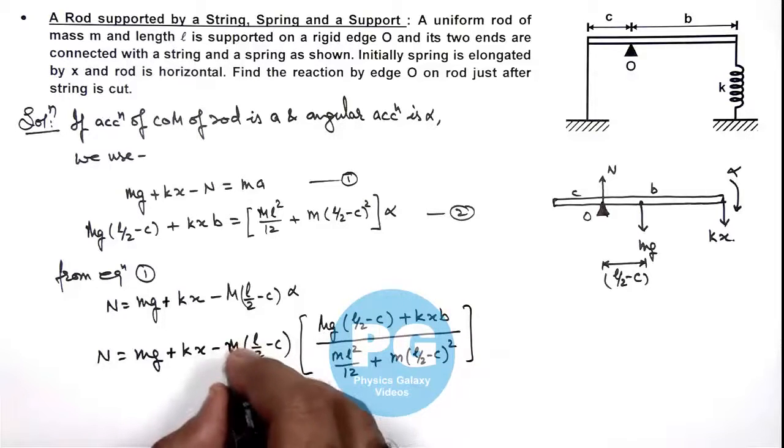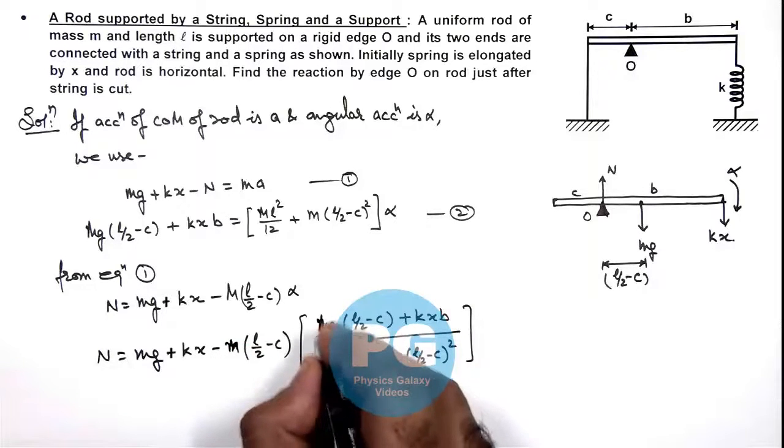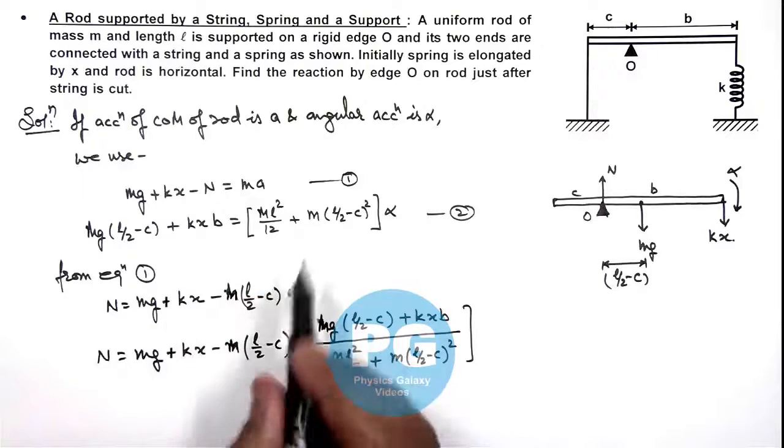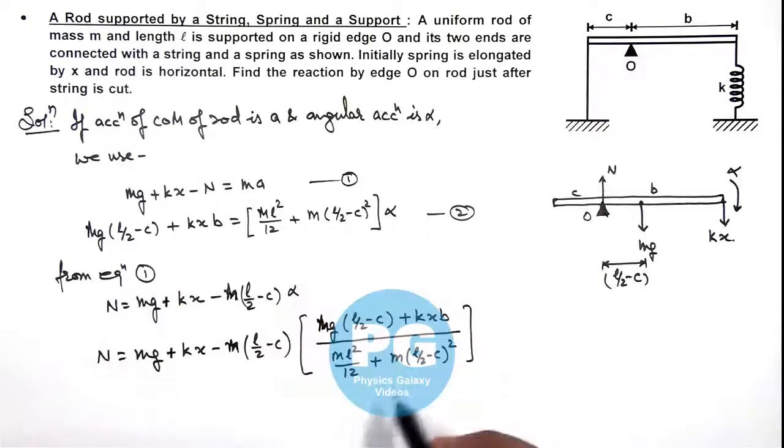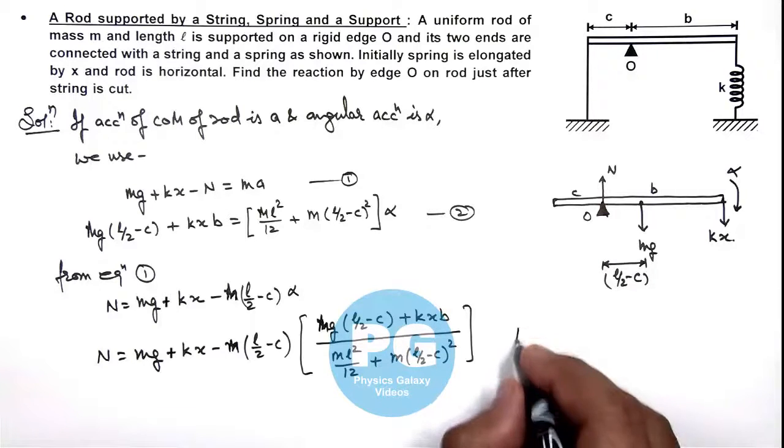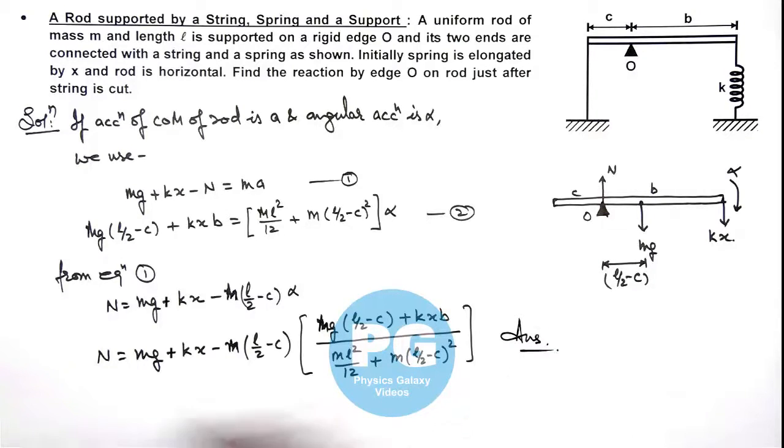Here all masses are equal and that of rod, somewhere I have written it as small m or capital M but all are same, that of rod which is the only body over here. And this is the result of our problem. The expression is quite lengthy but all the parameters are given to us so we can directly get the value of N over here.